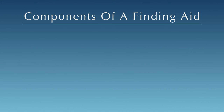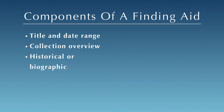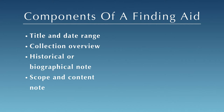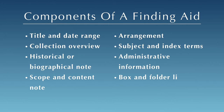All finding aids share certain components, no matter what institution you are visiting. These components can include the title and date range of the collection, the collection overview, the historical or biographical note, the scope and content note, information on the arrangement of the collection, subject and index terms, administrative information, and a list of folders and box numbers within the collection.